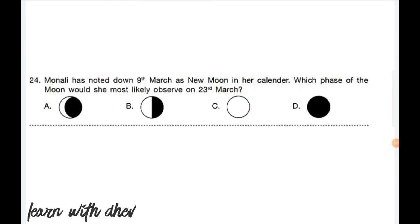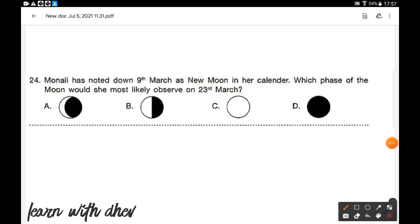Monali noted down 9th March as new moon in her calendar. Which phase of the moon would she most likely observe on 23rd March? Every 15 days the moon phase changes. So after 15 days from 9th March — which is 23rd March — it will be a full moon day. Option C is the correct answer.